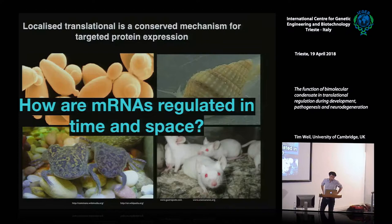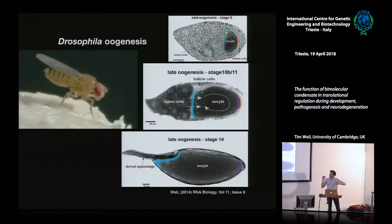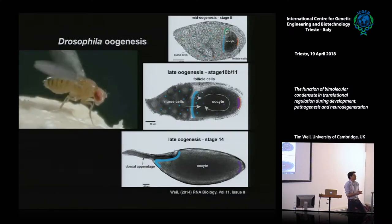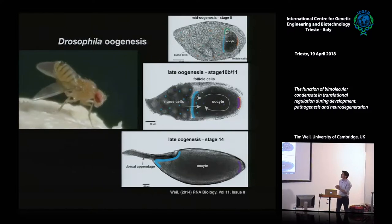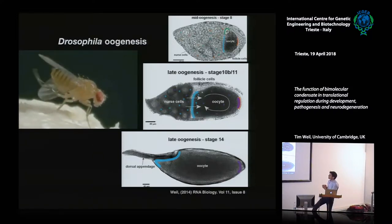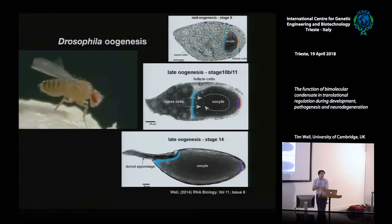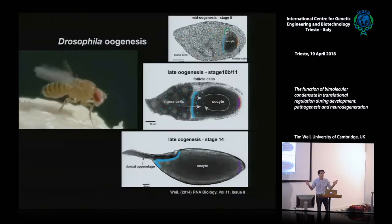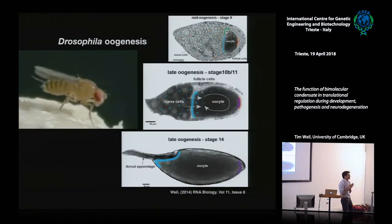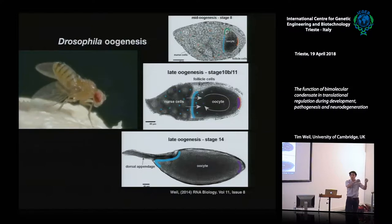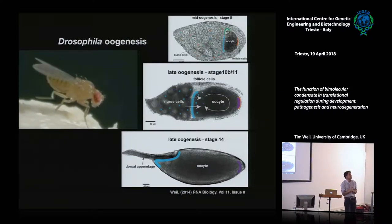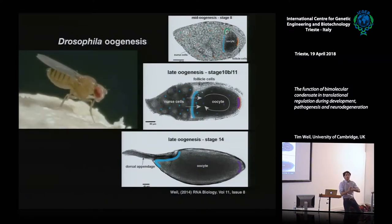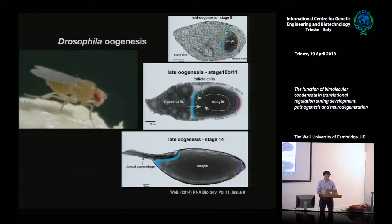What I've worked on since my PhD is Drosophila oogenesis — the formation of the egg. There are a number of different stages we go through: early, middle, and late. They all involve cytoskeleton reorganizations, membrane proteins, and all kinds of different factors. I won't introduce all of them, but if you want, just grab me and I can talk about oogenesis for hours.